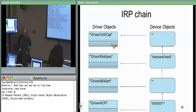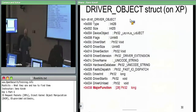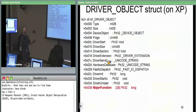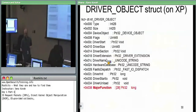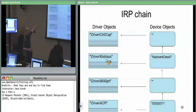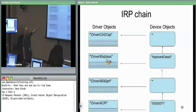The driver object structure has a major function array at the end — an array of 28 function pointers. For each entry, it's a function pointer that says: if a particular type of IRP is coming down the chain, call my driver at this particular function. An attacker can add themselves in and call into their driver object, or alternatively find someone already in the chain and rewrite that function pointer so it calls their functions instead.